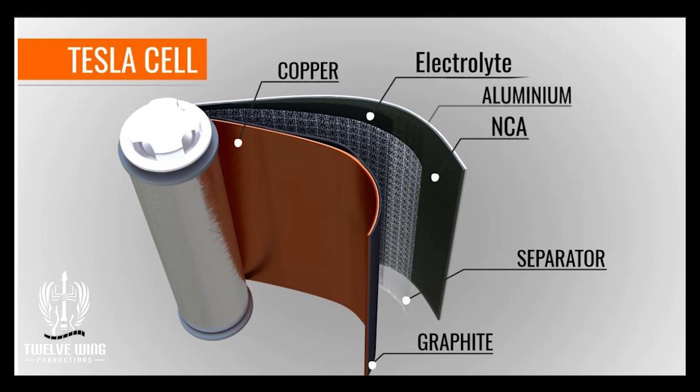Then you have the separator layer, which keeps the NCA layer and the graphite separate. It's a piece of specialized plastic that uses a property called microporosity, which allows the lithium ion to pass back and forth from the NCA layer to the graphite without allowing the positive and negative sides of the battery to touch. And then you have the electrolyte, which is also a paint or paste applied to that separator layer. All of that is wound up into the battery.